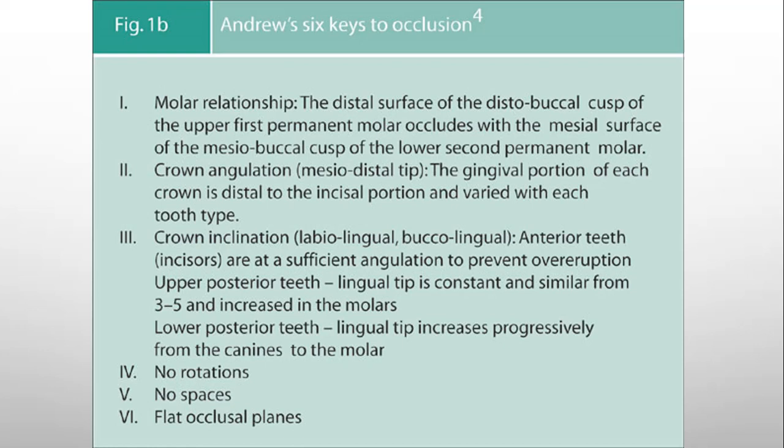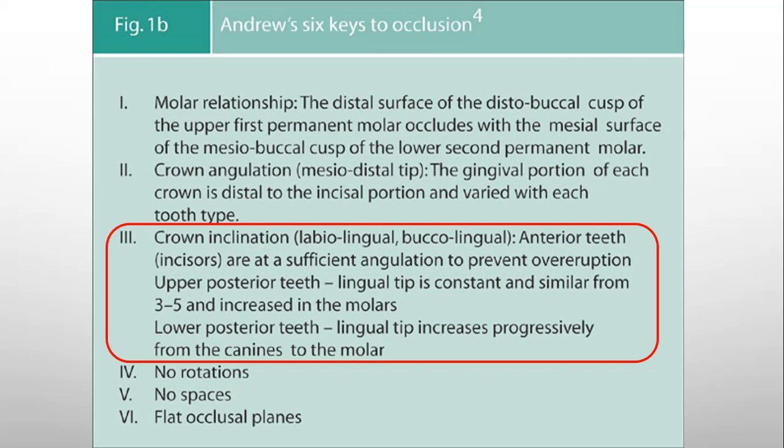Here I am showing you Andrew's six keys to occlusion. The third key, which is about the crown inclination or labiolingual or buccolingual inclination of the teeth, this key is directly related with the third-order bends. According to this key, anterior teeth or incisors in a normal occlusion should be at sufficient angulation so that they can prevent over-eruption.